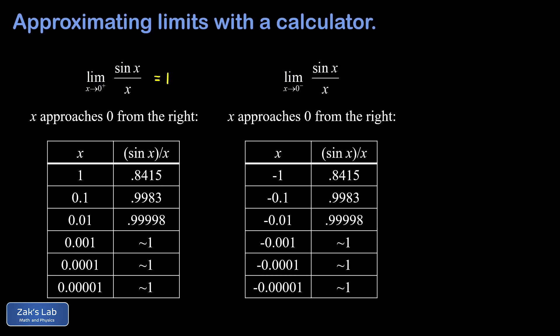Now when we repeat this process from the left, plugging in x equals negative one, negative 0.1, negative 0.01, and so on, we actually get all the same values of sine x over x. And this is because sine x over x is an even function, and that just means replacing x with negative x just yields the exact same y value.